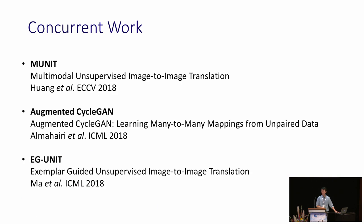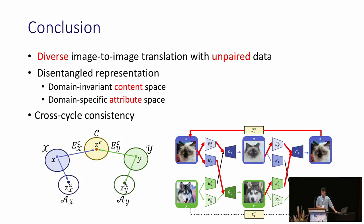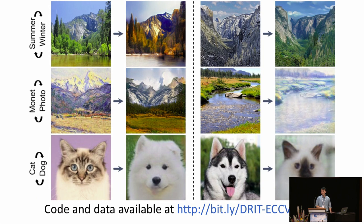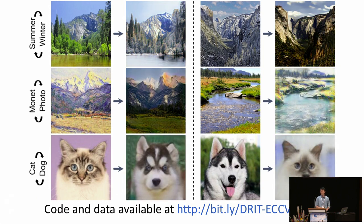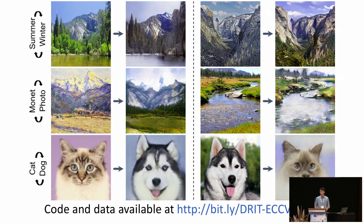Recently, there are some concurrent works that also propose a similar idea, despite some interesting differences. We encourage everyone to check them out for a better understanding of this topic. In conclusion, we propose to leverage disentangled representations with the help of cross-cycle consistency to achieve diverse image-to-image translation without paired training data. Thank you very much for your attention. The code and data are available — please visit us at the poster session, poster number 89.